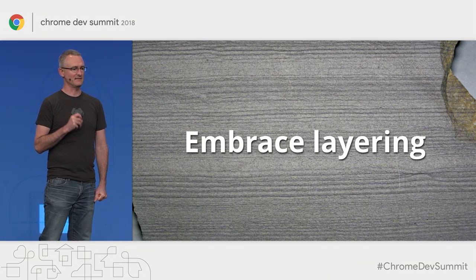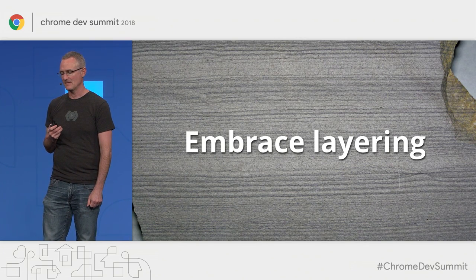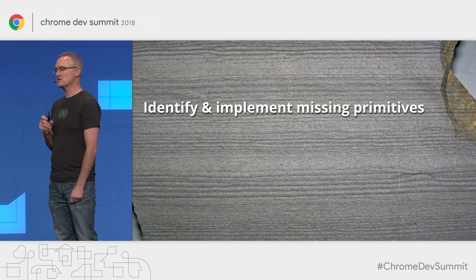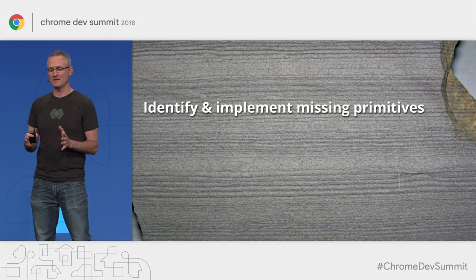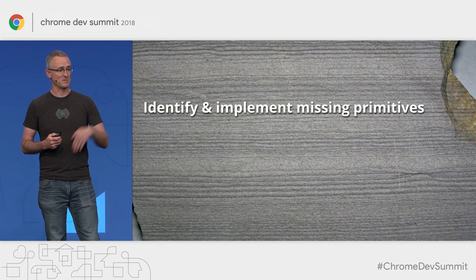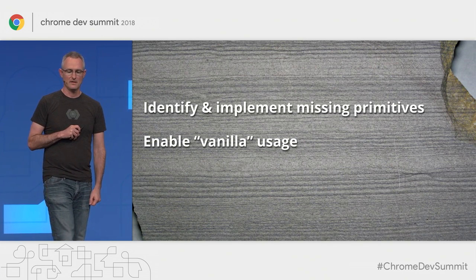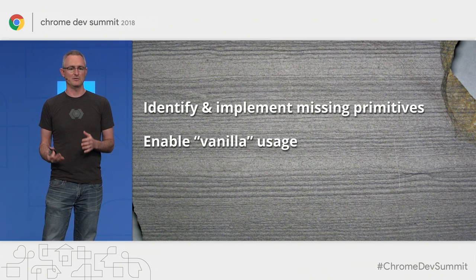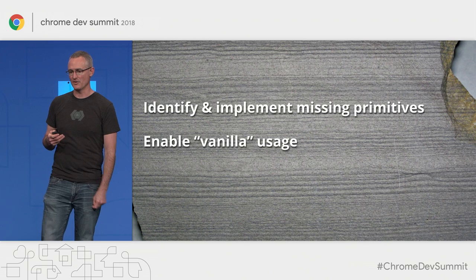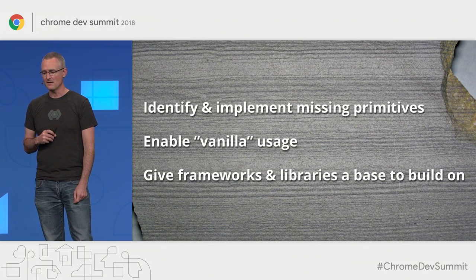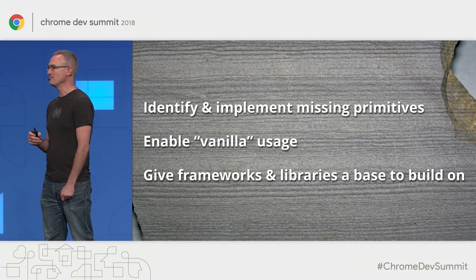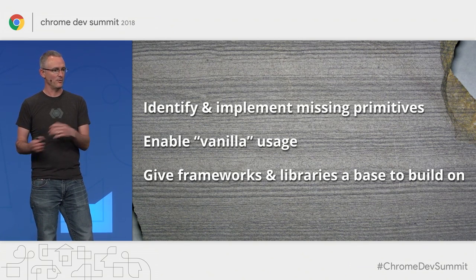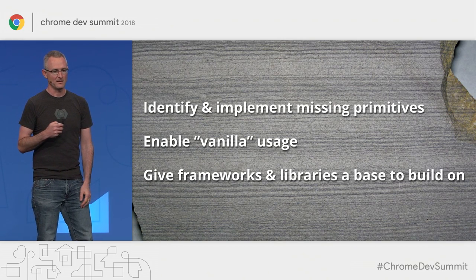Next, we want to embrace layering. One of the important things we want to do is identify and implement any lower-level primitives that the browser may be missing in order to support this high-level use case. We also want to enable this to be used right out of the box, without requiring a framework. But we also want to give frameworks and libraries a solid base to build on — ideally the virtual scroller itself is something they can take and layer features on top of for their own solutions.